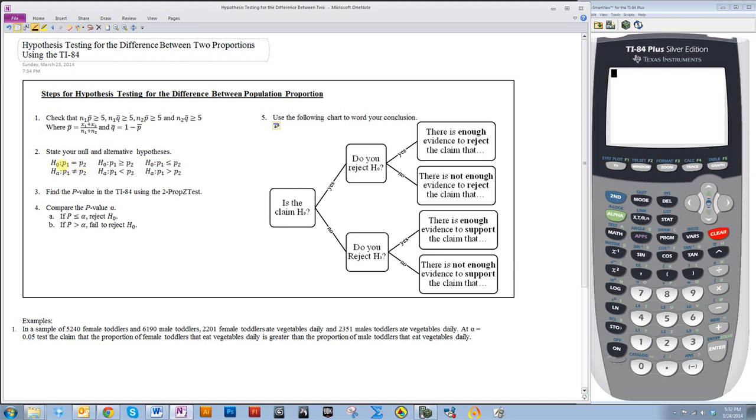Then you need to state your null and alternative hypotheses. Notice they compare the population proportions for each of the first set and the second set. P always represents population proportion, p-hat represents the sample proportion. Then you find the p-value using the two-prop z-test. You use that p-value to determine if you reject or fail to reject H0 by comparing it to alpha. Then you use the following chart to determine how you're going to word your final conclusion.